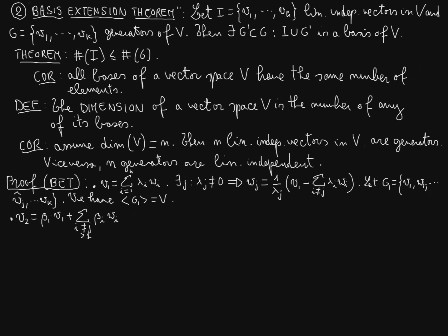Of beta i different from j and greater than 1, beta i's w_i. So we will be using the remaining w_i vectors. And again, we can actually conclude that there exists an index a such that beta a is different from zero.